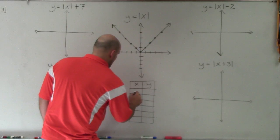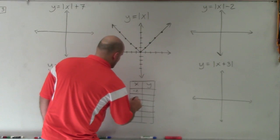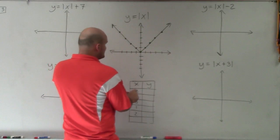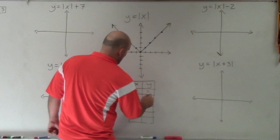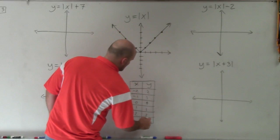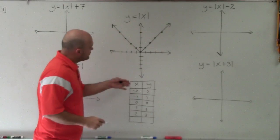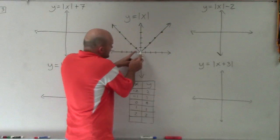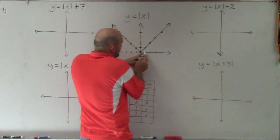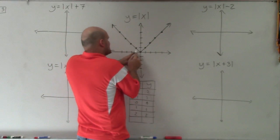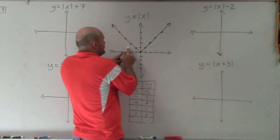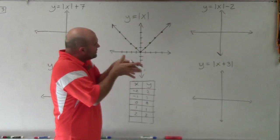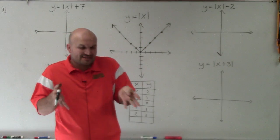So if I did negative 2, negative 1, 0, 1, and 2, you can see that the absolute value shows up creating this v-shaped graph, where the slope is over 1, up 1, over 1, up 1 — even though one side is negative and one is positive, it creates that same shape.